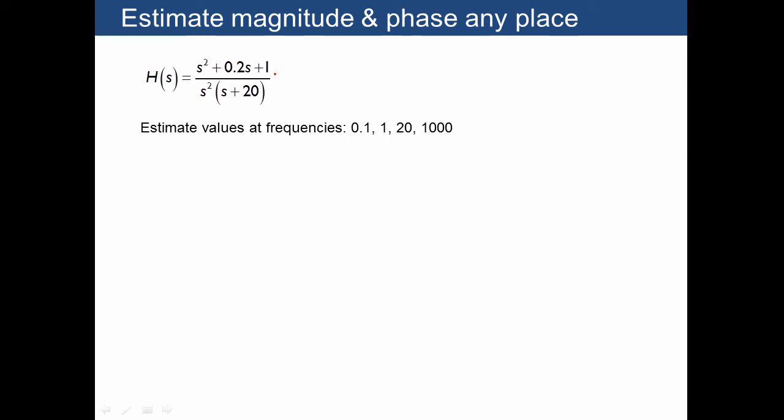Let's take a look at this transfer function, which we've already drawn the Bode plot of. Suppose we want to evaluate the magnitude and phase at these sample frequencies. When we plug in 0.1, think that 0.1 is a very small number compared to the 1 here, so we treat that as a 1. We have 0.1 j squared. In the denominator, j times 0.1 plus 20 is very close to just 20. What we end up with is 1 over 0.1 squared, which is 100 divided by 20, giving us 5. We have 2 j's in the denominator, which gives us an angle of negative 180 degrees.